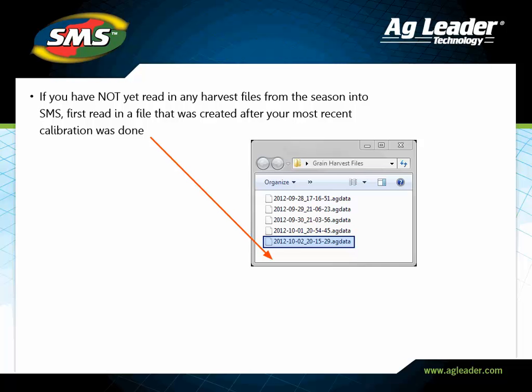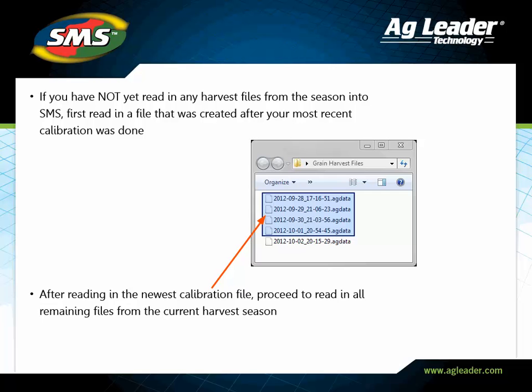If you have not read in any of your harvest data yet, you simply need to read in a file that was created after you calibrated your display first into SMS. Once this individual file has been read into SMS, you will be able to read in the rest of the files from your card.